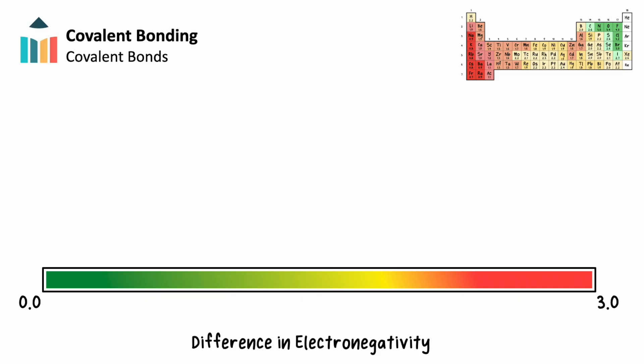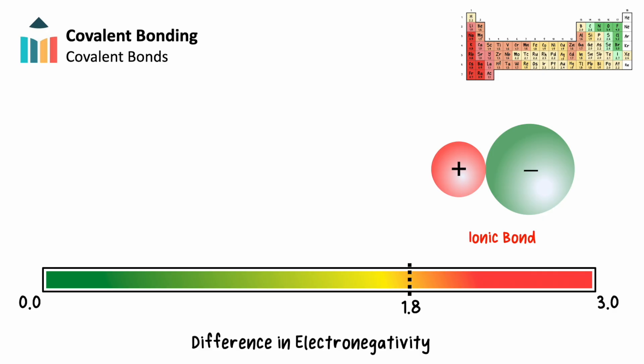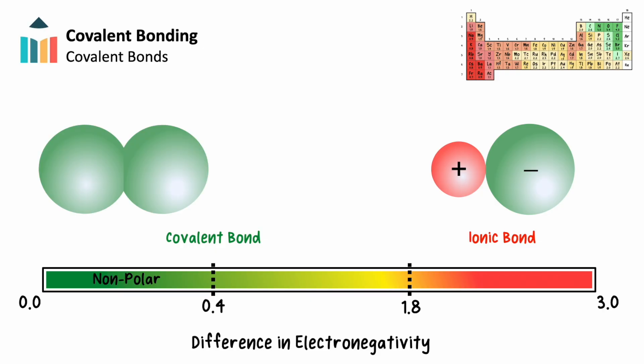We can see this on a spectrum. Differences in electronegativity that equal 1.8 or greater create ionic bonds, where electrons are stolen by the more electronegative element creating ions that stick together. Differences less than 1.8 create covalent bonds, where electrons are shared between two atoms. Within this range, differences equal to 0.4 or less create nonpolar covalent bonds, where electrons are shared equally between two atoms.